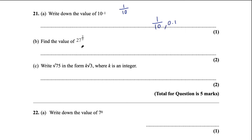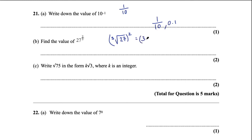Part b says find the value of 27 to the power of 2 over 3. This is like 27 to the power of a third, squared — so this is the same as the cube root of 27, all squared. The cube root of 27 is 3, because 3 times 3 times 3 is 27, and then 3 squared is 9. So the final answer there is 9.